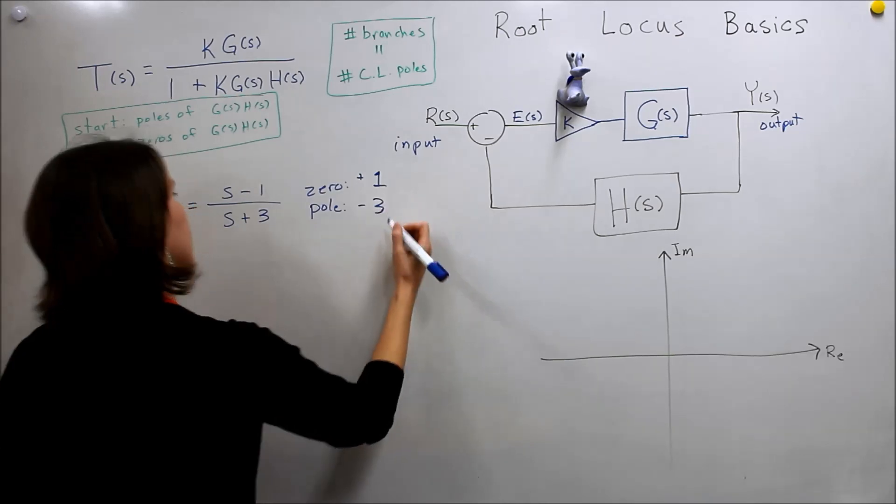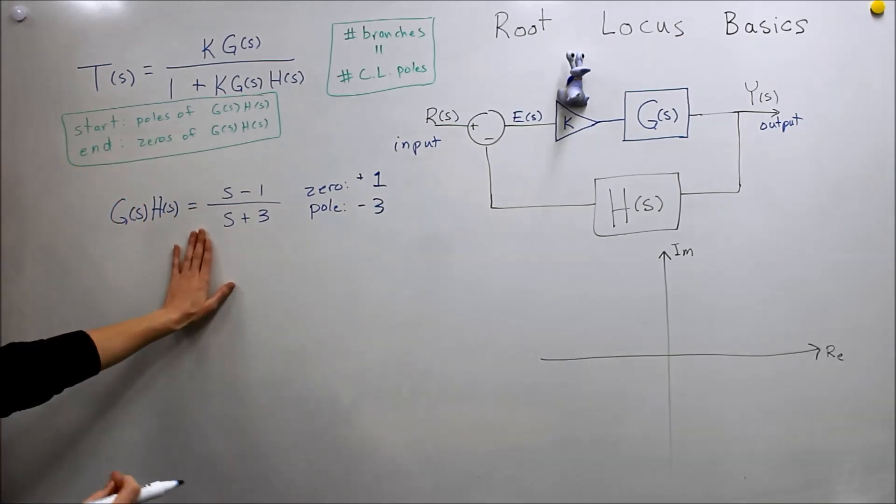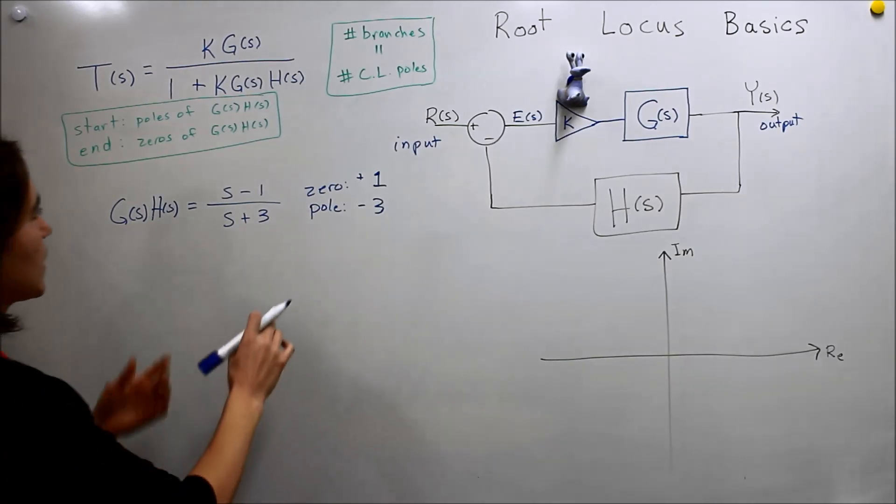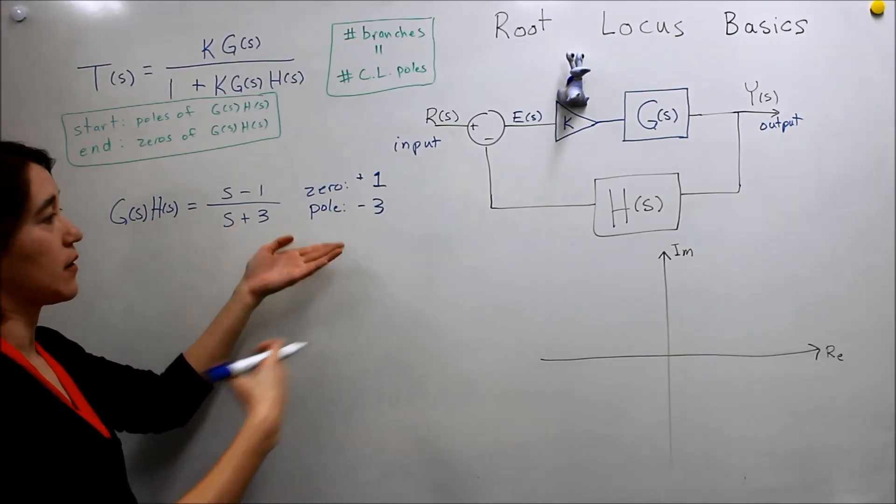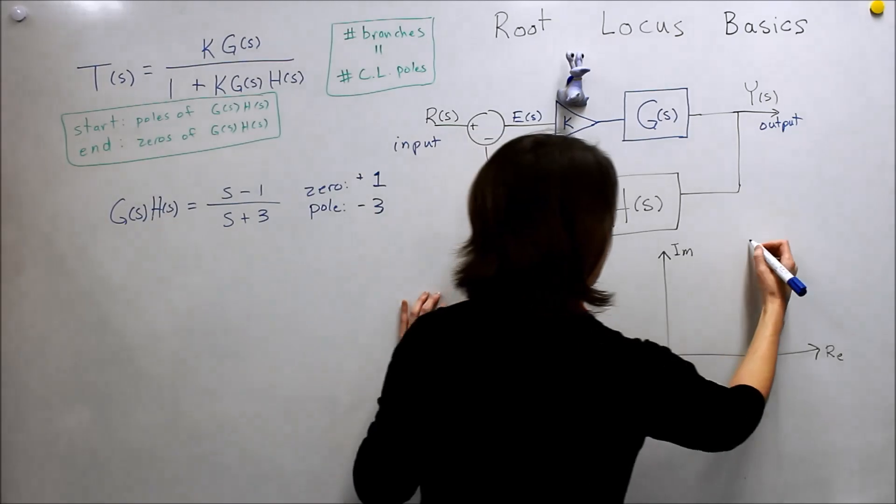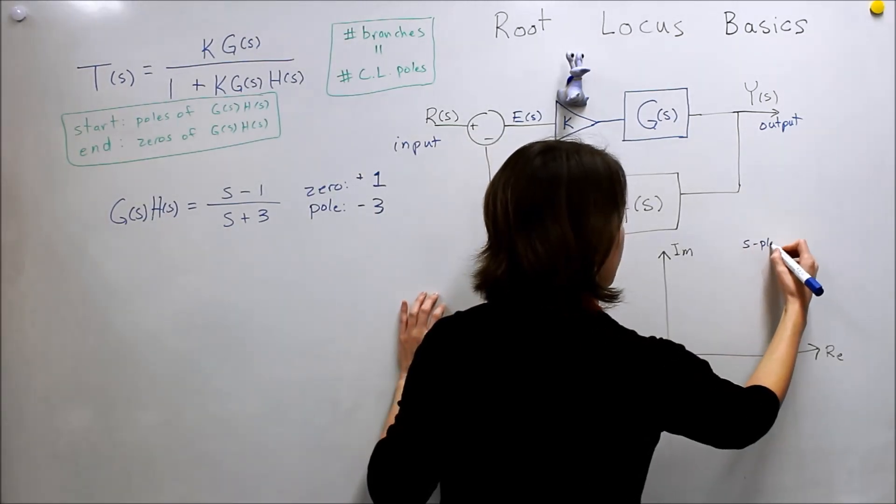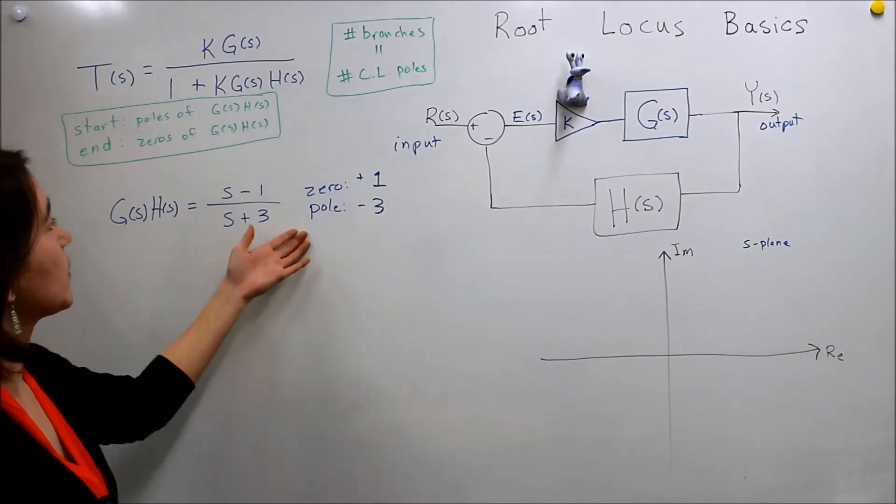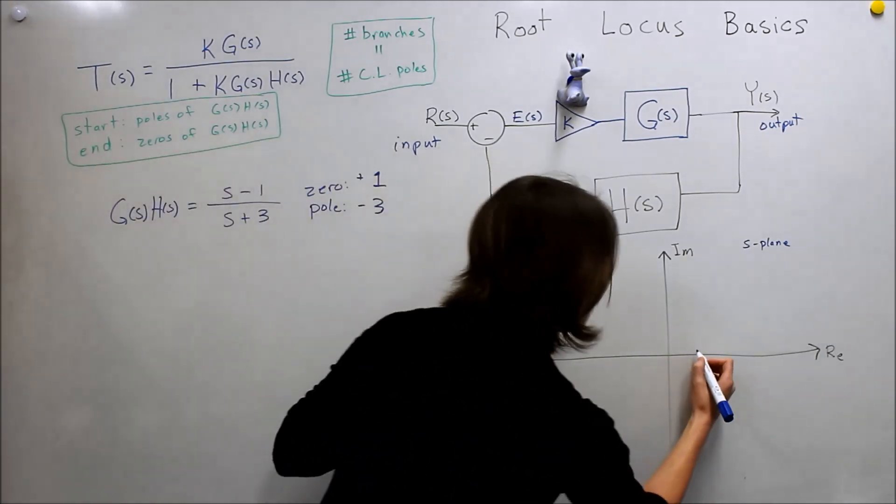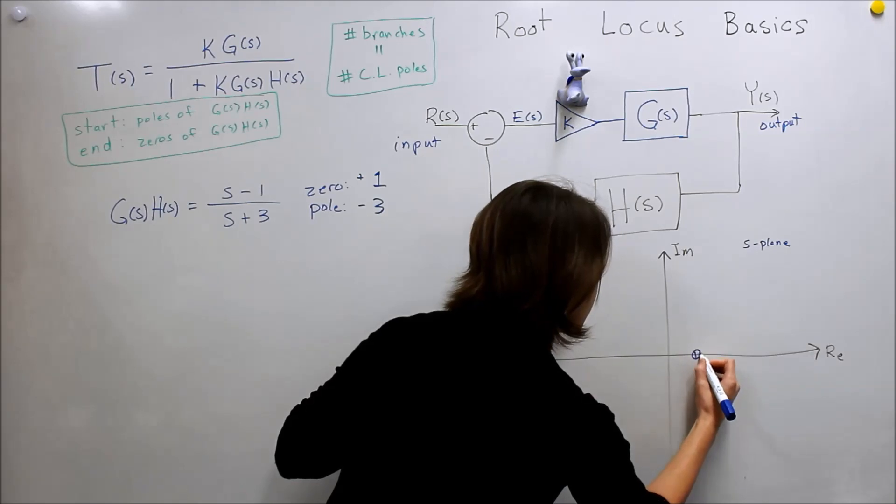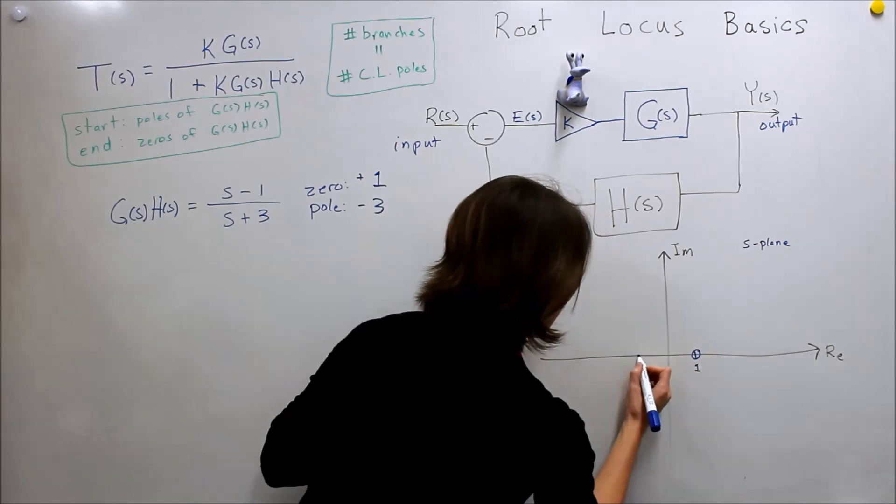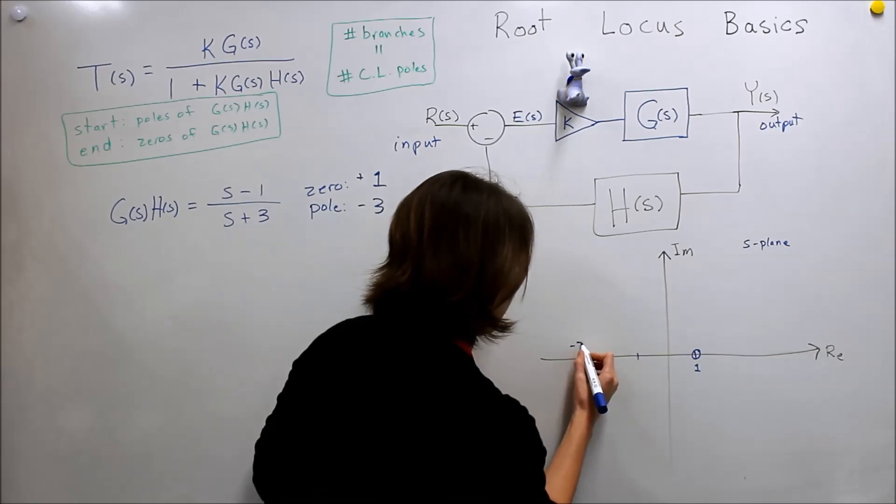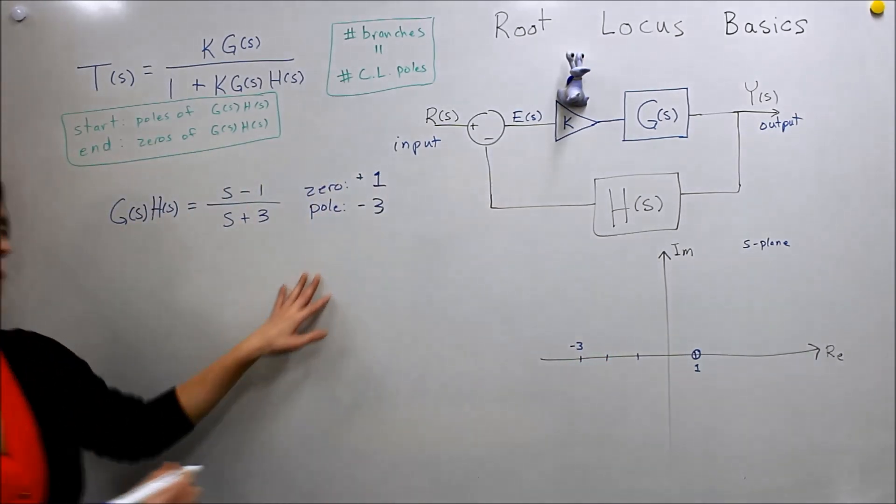This would be a stable function on its own, so that's good to know. And so what we'll do first is, here's our S plane, and we will simply draw those two points on the plane. So we'll start with our zero at one, and then at negative three, so one, two, three, so I'll put it up here, negative three, we put our pole.